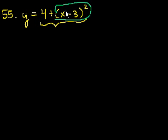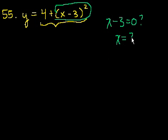This is going to be as small as possible when x minus 3 is equal to 0. When is x minus 3 equal to 0? Add 3 to both sides, it's when x is equal to 3.